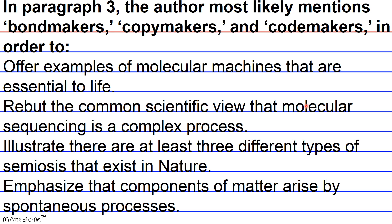As for answer choice C, in paragraph four, there's a reference to at least three different types of semiosis, and it's merely to underscore that there are codes at all levels of life, from the world of genes and proteins all the way up to mind and language. So this is a different reference. This isn't dealing with bondmakers, copymakers, and codemakers. So that's out as well. Although this is a very tempting choice. I could see why some people who are in a rush would select this. So don't feel bad if you selected that.